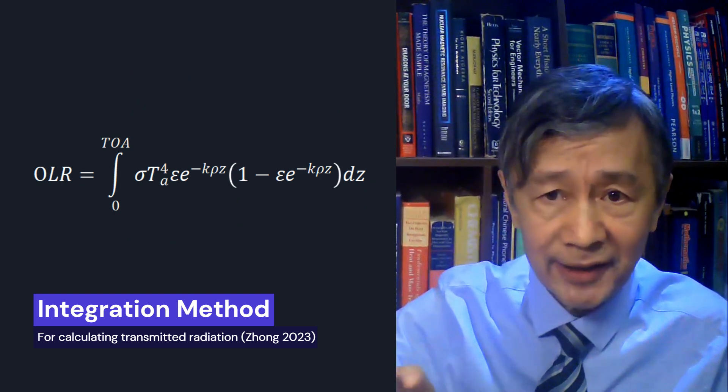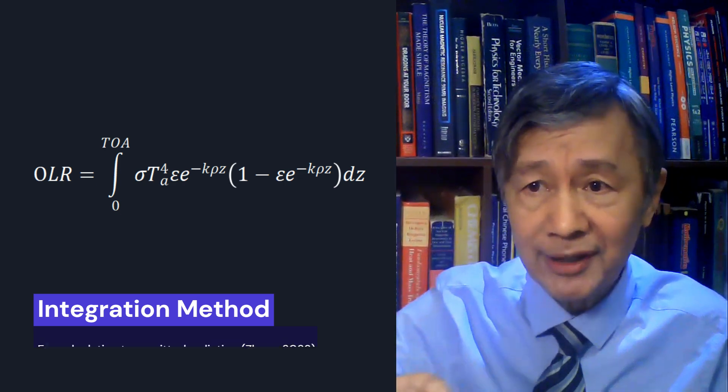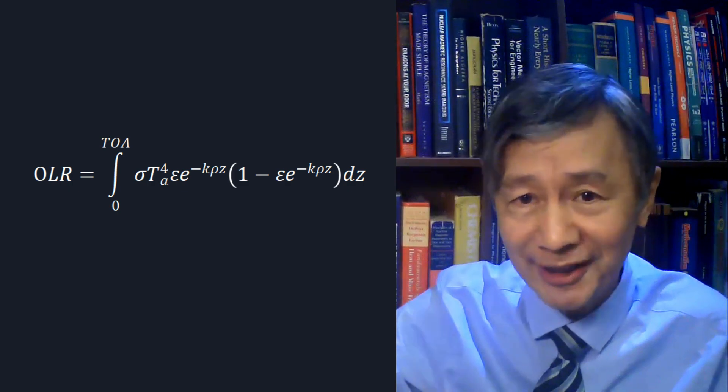Manabe and Wetherald also borrowed Simpson's method, but their paper was poorly written with too many trivial details and empirical approximations without proper explanation. Actually, Simpson had used his method to calculate the transmitted surface radiation at the top of the troposphere. Still, we can use this method to calculate the effective infrared emission for each layer at the top of the atmosphere, called R in this table. After that, we can simply add them up to obtain the total OLR. I have also worked out an integration formula for dealing with an infinite number of layers if finite isothermal layers are not considered good enough.